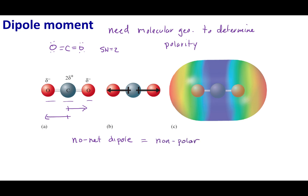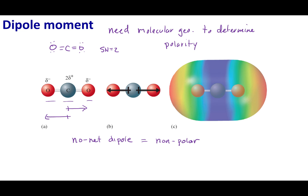The idea here is that dipole arrows are telling you which way the electrons are going. If they cancel each other out, that means the electrons are basically evenly spread throughout the molecule. But let's take a look at water.